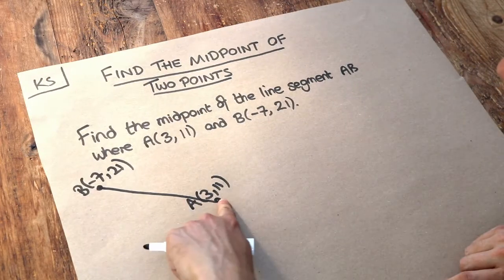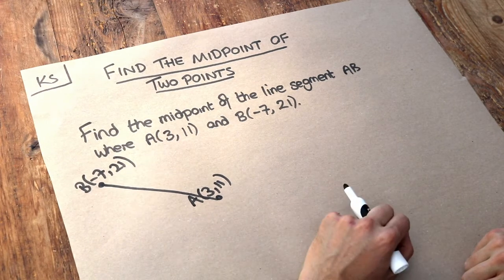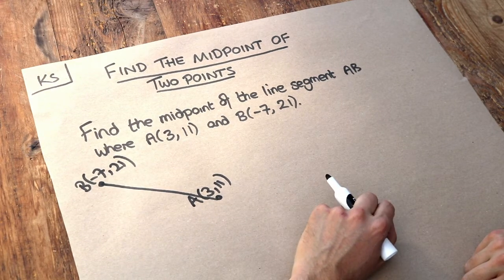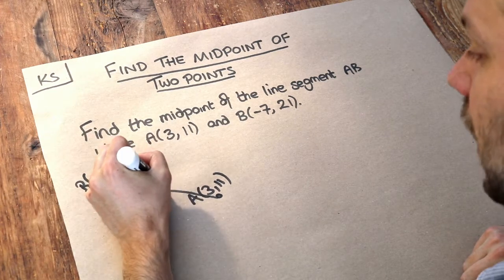Now a line segment is a line which just connects points and is finitely long, so it doesn't go on forever, and we want to find the midpoint of these two points, so that's going to be halfway between. Let's just call that M.